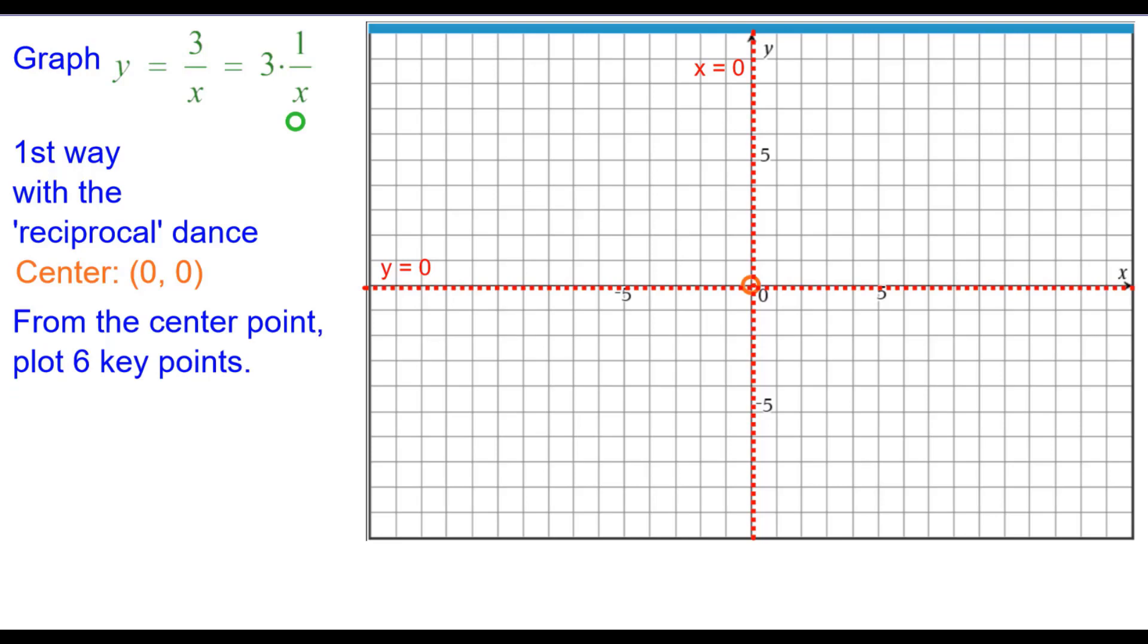From the center, let's plot six key points. So normally we go right 1 up 1, but we go right 1 up 3 because of the factor of 3. Right 2 up 3 halves normally would be right 2 up 1 half, but it's times 3. And right 1 half up 6. Left 1 down 3. Left 2 down 3 halves. And left 1 half down 6.